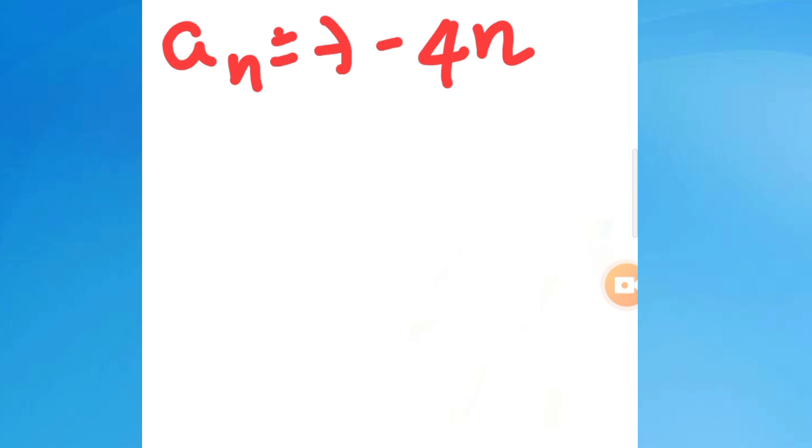To find the common difference, use the formula d = a₂ - a₁ = a₃ - a₂. First we need to write a₁, a₂, a₃, then we can easily find the common difference. So first I will give the n value as 1.